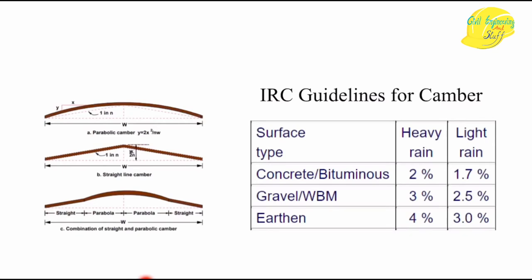The IRC has guidelines for camber values. For bituminous and concrete pavements: 2% camber for heavy rainfall areas and 1.7% for light rainfall. For gravel or water-bound macadam roads: 3% for heavy rainfall and 2.5% for light rainfall. For earthen roads: 4% for heavy rainfall and 3% for light rainfall. These higher values make sense because earthen roads are compacted natural soil.